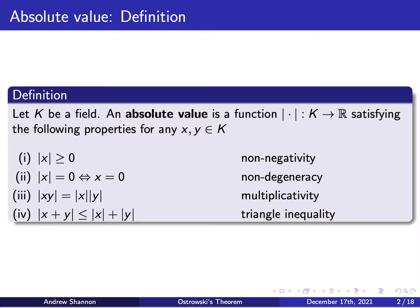So first we want to understand the idea of an absolute value. Given a field k, an absolute value is a function double bar from k to the real numbers that satisfies the following properties for any two elements x and y of the field. One, the absolute value of x is greater than or equal to zero. Two, the absolute value of x is zero if and only if x is itself the zero element of the field. Three, the absolute value of the product of x and y is the product of the absolute values of x and y — this is called multiplicativity. Four, the absolute value of the sum of x and y is less than or equal to the sum of the absolute values of x and y, which you may recognize as the triangle inequality.